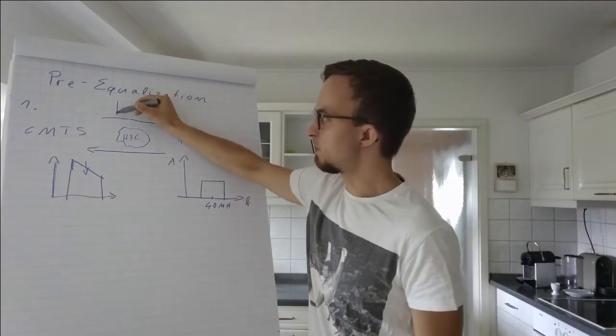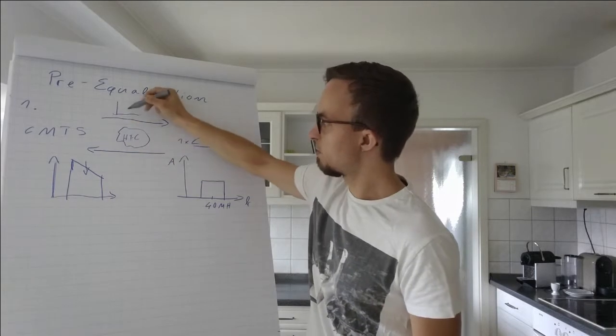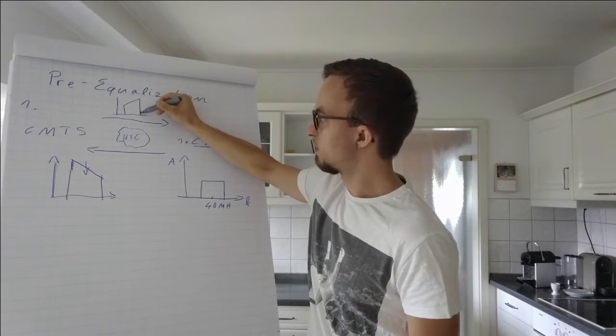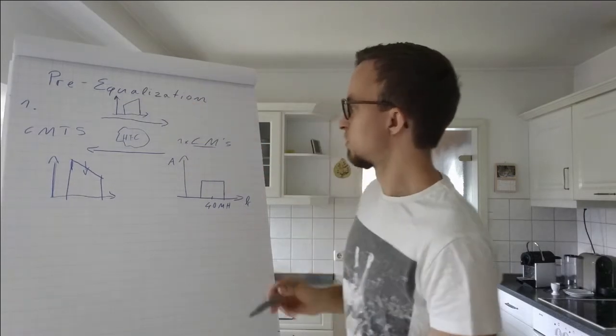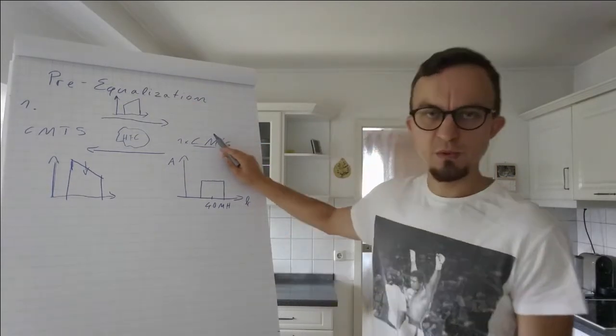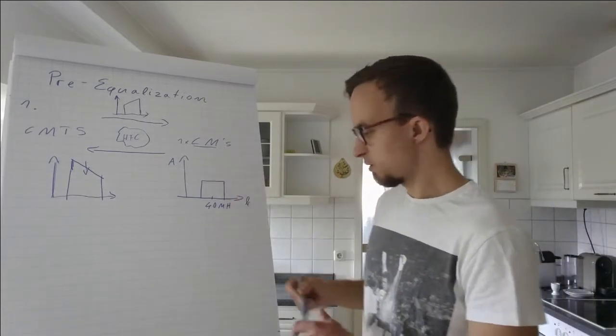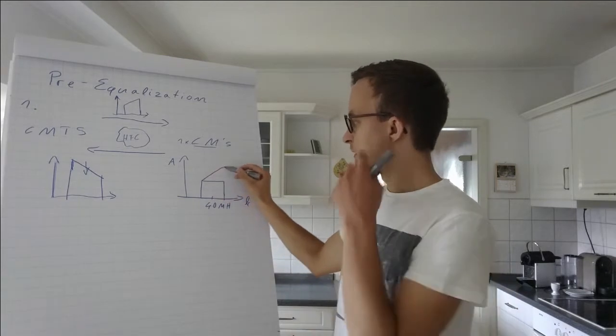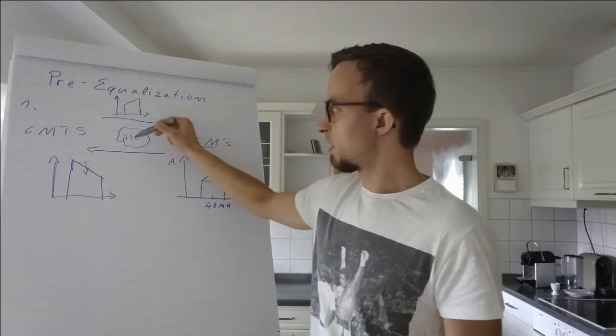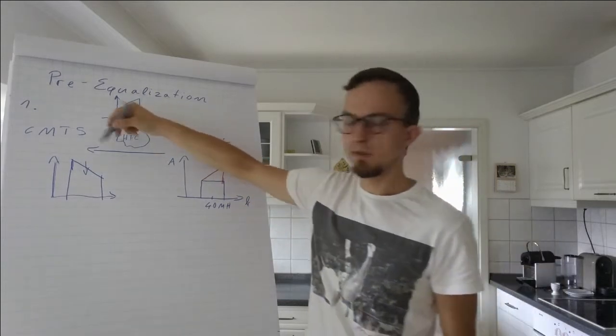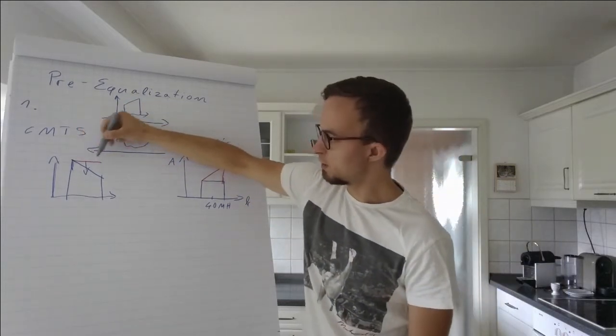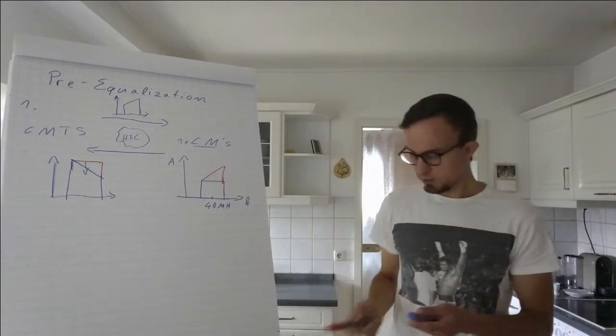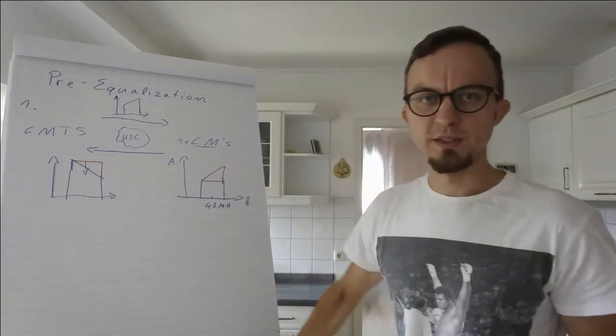The CMTS will tell the cable modem how to adjust. The next time the cable modem transmits a signal, it will transmit it differently. Then we have the impairments inside our network, and the result is that the new signal at the CMTS will look nearly perfect. So that's what DOCSIS pre-equalization does.